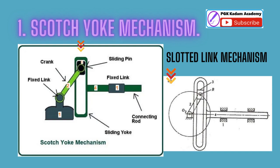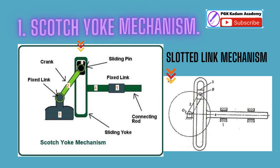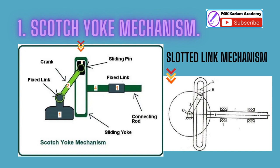Links in the Scotch yoke mechanism: 1. Frame, which is fixed. 2. Crank. 3. Slider. 4. Yoke — the yoke is free to slide inside the frame. Kinematic pairs in the Scotch yoke mechanism: 1. Frame and crank form one turning pair. 2. Crank and slider form another turning pair. 3. Yoke and slider form one sliding pair. 4. Frame and yoke form another sliding pair.